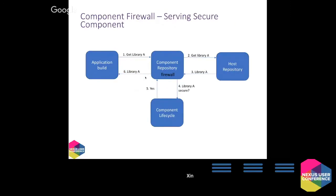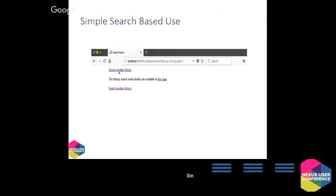When you hit the search button, that component information is sent to the web server application. The application mimics a Maven process — it sends HTTP requests to the proxy repository saying it needs to get a particular component. The proxy repository goes through the motion, gets the component, goes through the Nexus IQ evaluation of the policies on that component, and returns it back to the application. At that point, the application knows we found that component and it is in the proxy repository.